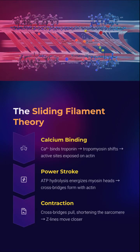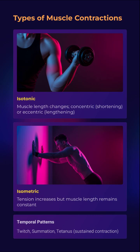Here's the contraction mechanism in action. Calcium binds to troponin, shifting tropomyosin and exposing actin's active sites. Myosin heads, energized by ATP hydrolysis, latch onto actin, forming cross bridges. As myosin pulls, sarcomeres shorten, producing contraction.